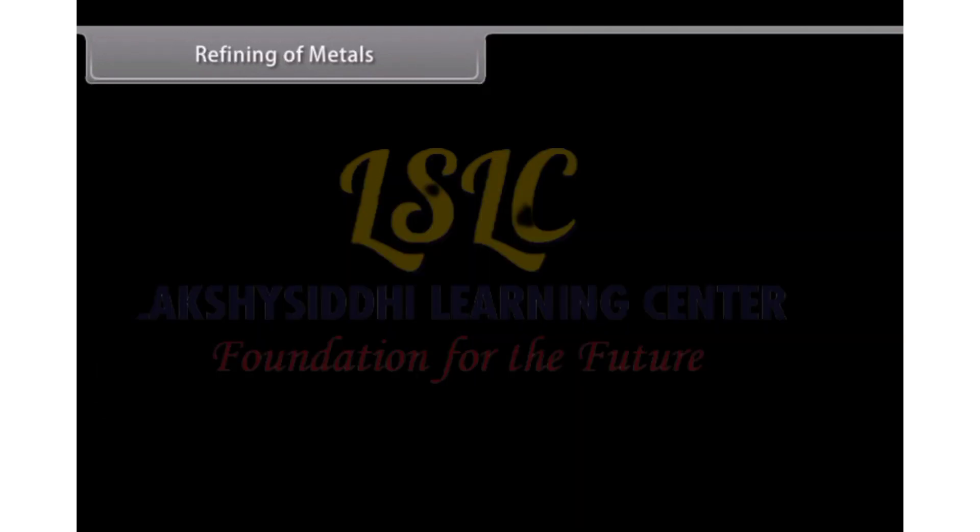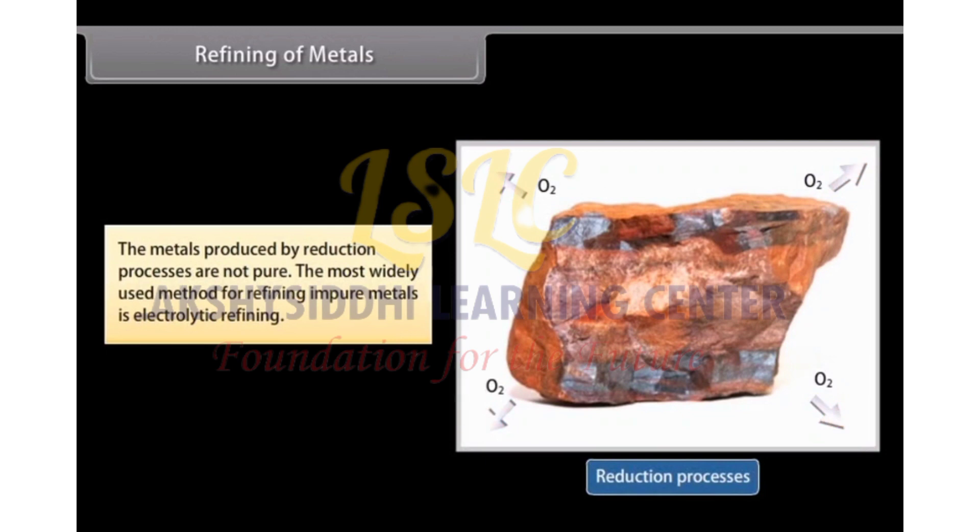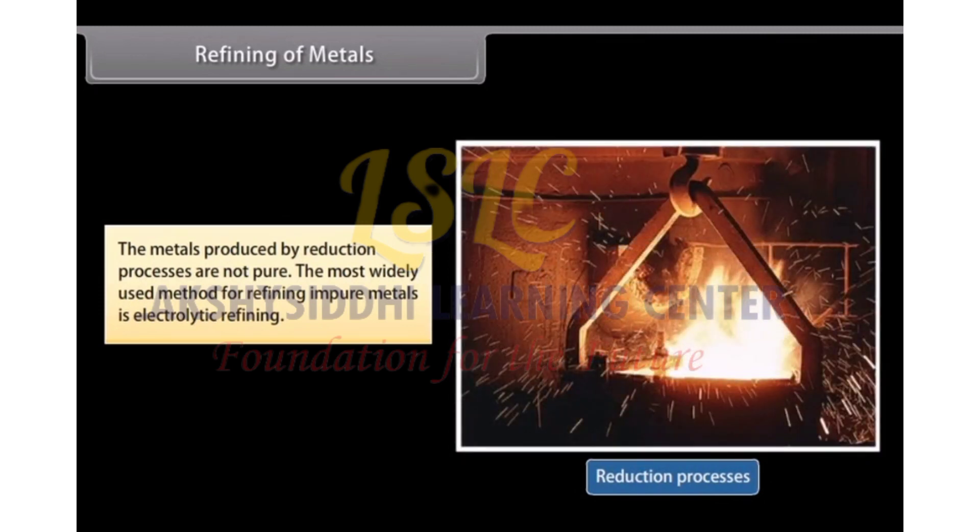Refining of metals. The metals produced by reduction processes are not pure. They still contain impurities which must be removed to obtain pure metals. The most widely used method for refining impure metals is electrolytic refining.